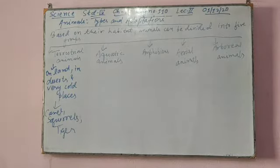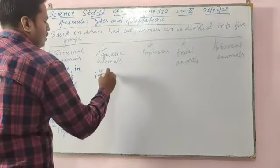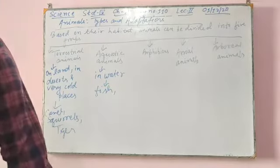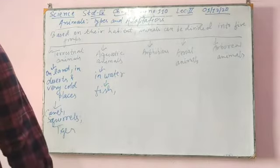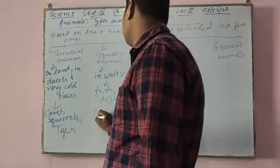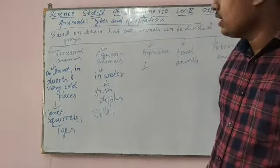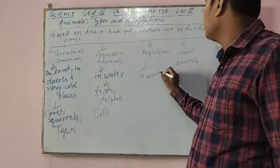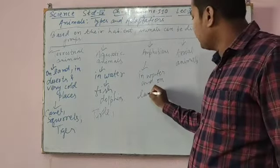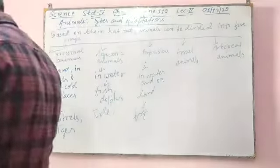Aquatic animals are animals who live in water, like fish, dolphins, and turtles. Amphibians are animals who can live both in water and on land. Examples of amphibians are frogs.